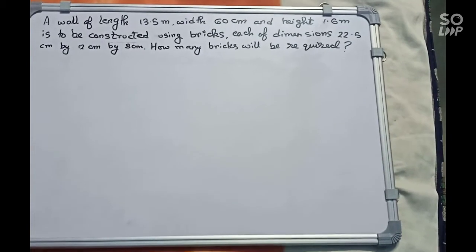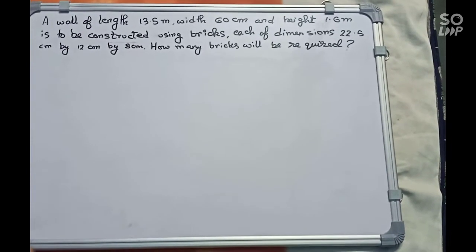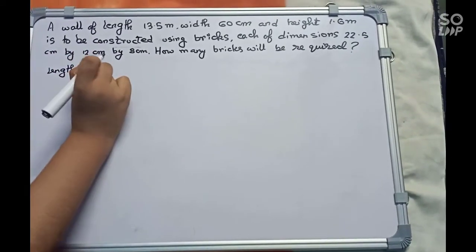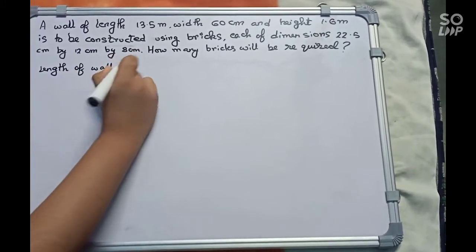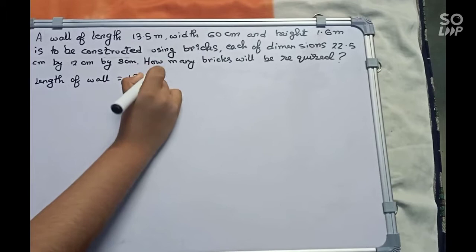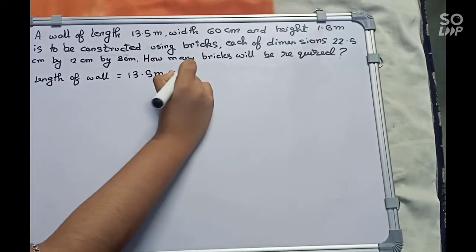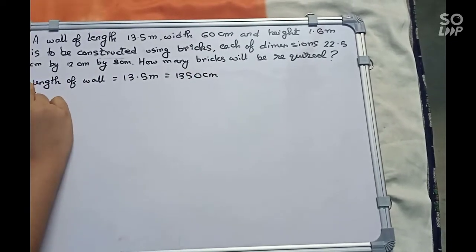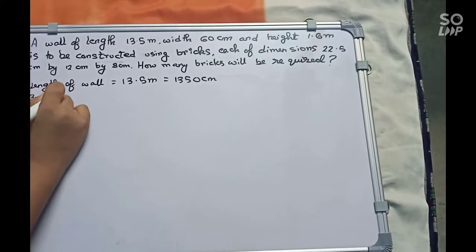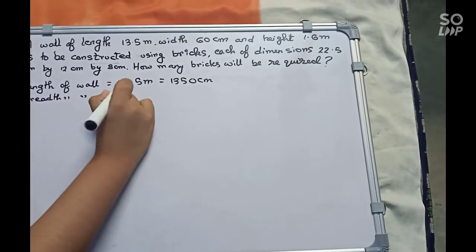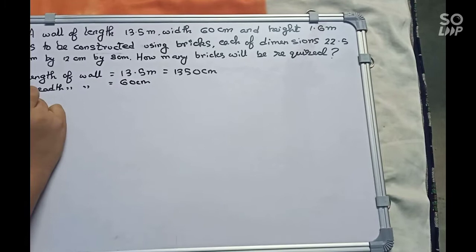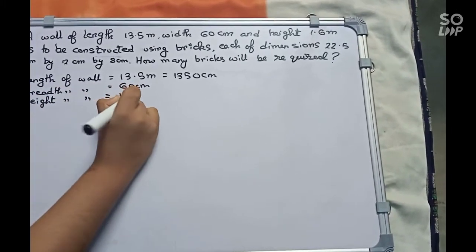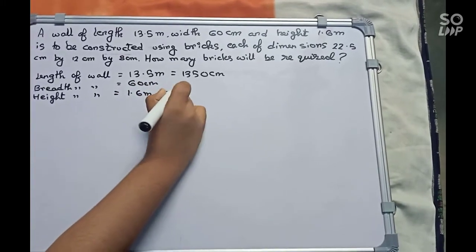How many bricks will be required? Let's start. First, length of wall equals 13.5 meters, which we can write as 1350 centimeters. Breadth equals 60 centimeters, and height of wall equals 1.6 meters, which equals 160 centimeters.